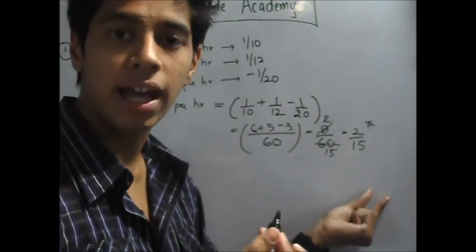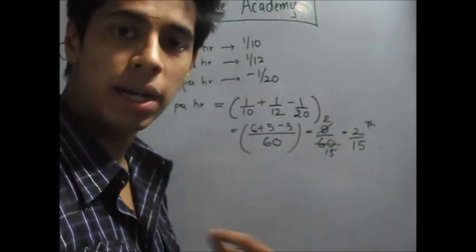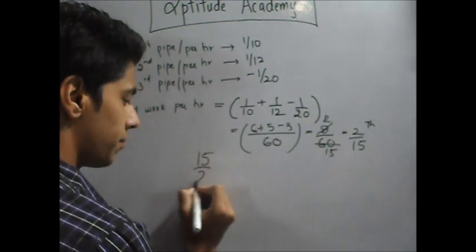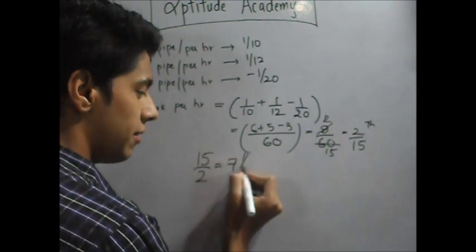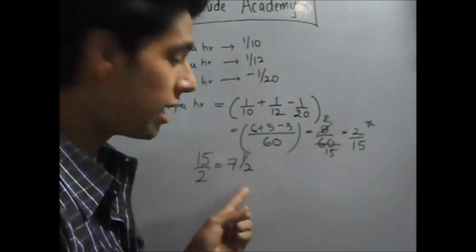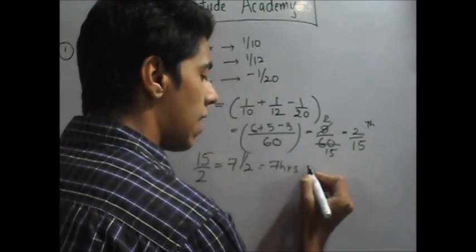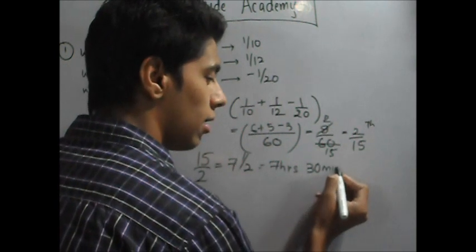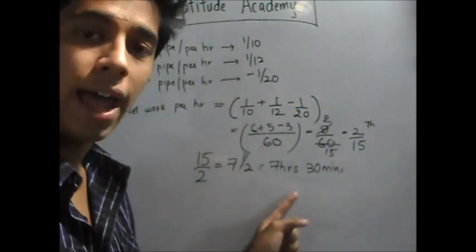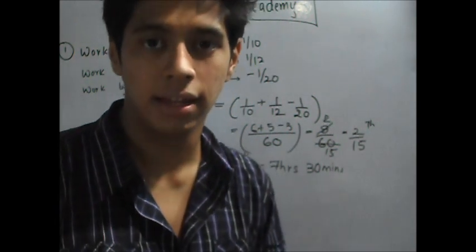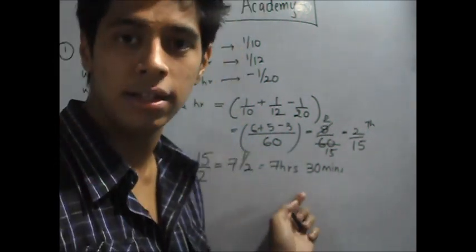If 2 by 15th is filled every hour, then how much time will it take to fill the tank? Just the inverse: 15 over 2, or 7 and a half. How can you write this in terms of time? It becomes 7 hours and 30 minutes. Now usually you see this option and you eliminate it because you think that the answer will always be in hours. That is not necessary.